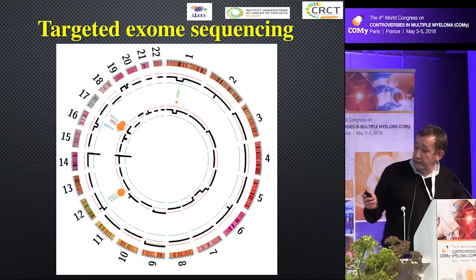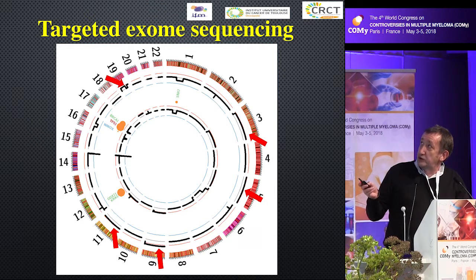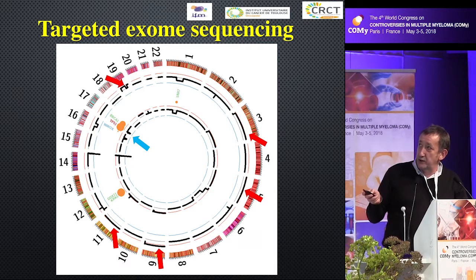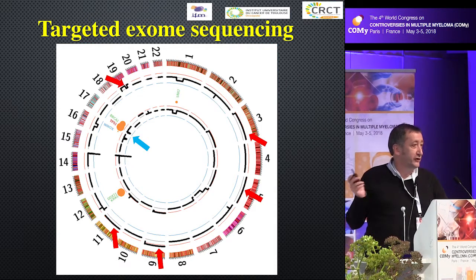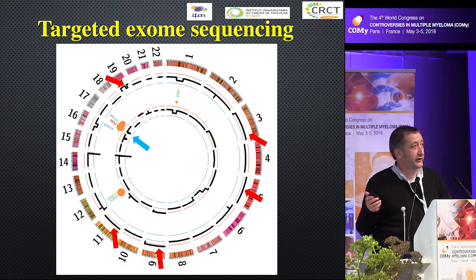And here you have another patient where the external circle is at diagnosis and the internal circle is at relapse. At diagnosis, this patient was good risk because of trisomies 3, 5, 9, 11, 19, with no other abnormalities. But at the time of relapse, what we observed is a deletion of 17p plus a mutation of TP53. So this patient who was good risk at diagnosis became ultra-high risk at the time of relapse. I think it is important to perform genetics at diagnosis but also at the time of first relapse.